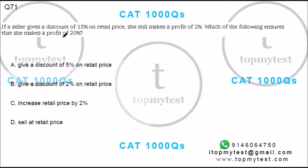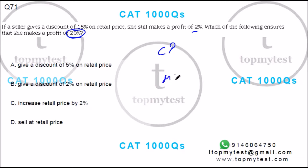This is a simple arithmetic question. If a seller gives a discount of 15% on retail price, she still makes a profit of 2%. Which of the following ensures that she makes a profit of 20%? So you have cost price, mark price, and selling price or the retail price.